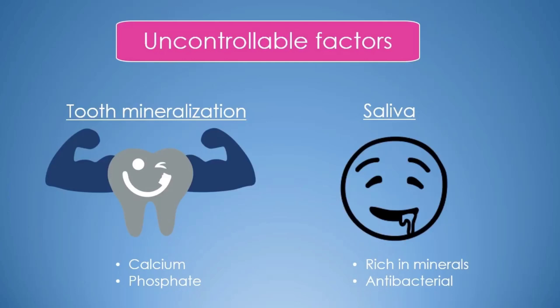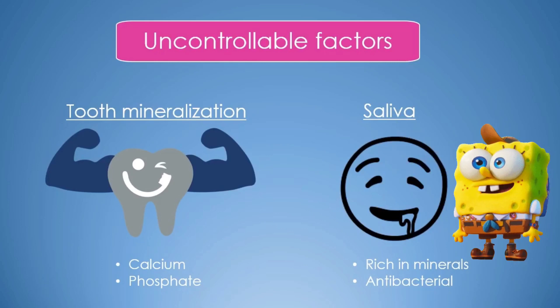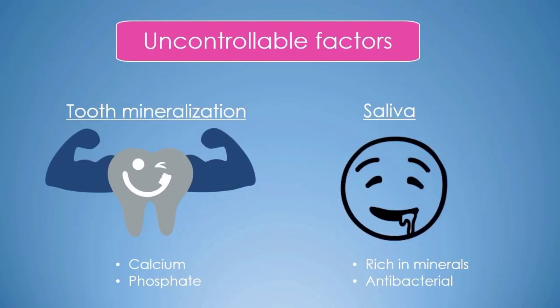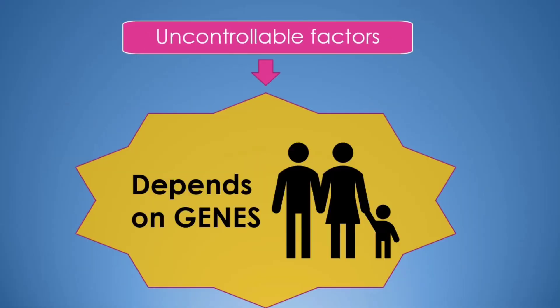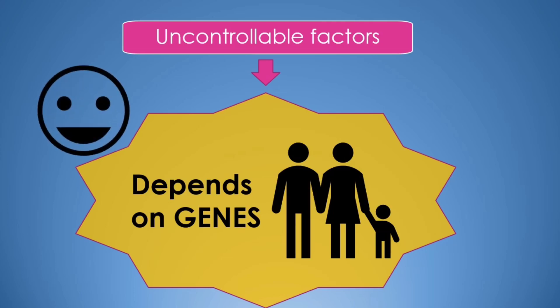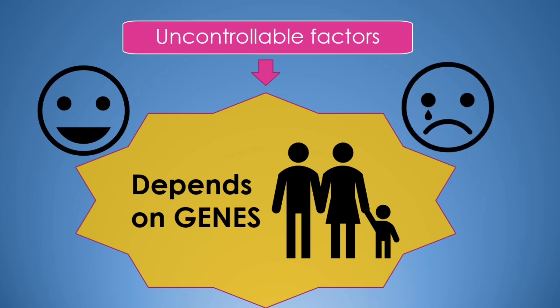Saliva also plays a very important role — it acts as a defender against cavities. It has antibacterial action and is rich in lots of minerals, reducing the chances of developing decay. But some people may have saliva which actually favors decay, due to low quality of saliva or as a side effect of some medications that reduce saliva flow, increasing the chances of decay. These are factors you may have been born with or lost in the genetic jackpot, which is why it's important to focus more on the controllable factors.